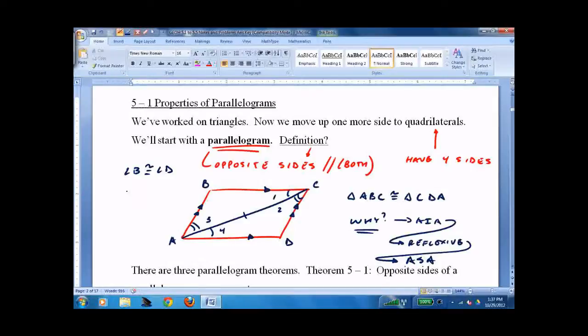We know that if we draw the line this way, angle A would be congruent to angle C. BC is congruent to AD.